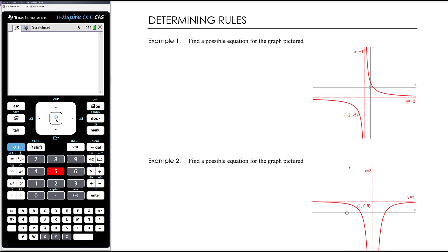In this video we want to work backwards. The last series of videos have all been about 'here's the equation, sketch the graph.' Now we're given the graph or information about the graph and need to find the equation. We need to think about what kind of function it is — transformations and points will help us find the equation.